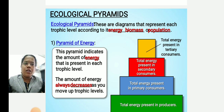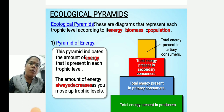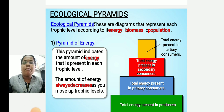Ecological pyramids represent the trophic levels according to their biomass, energy, and population. There are three different kinds of ecological pyramids. First, we will look at the pyramid of energy.